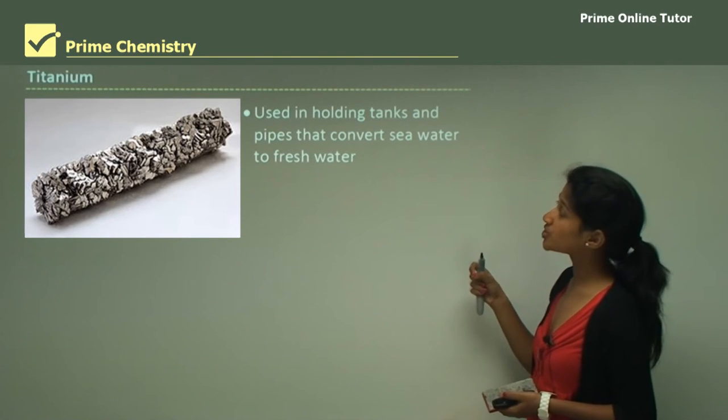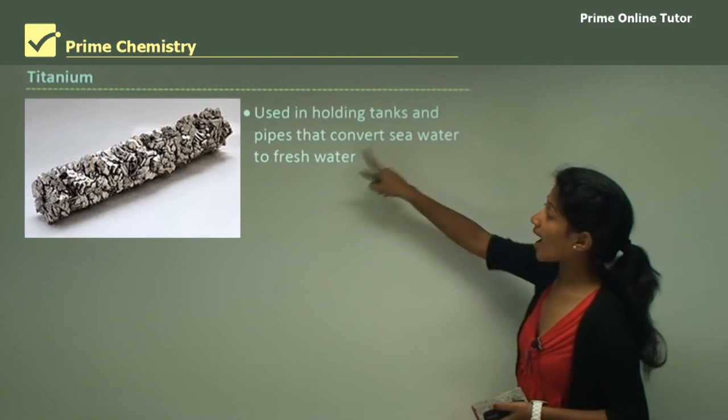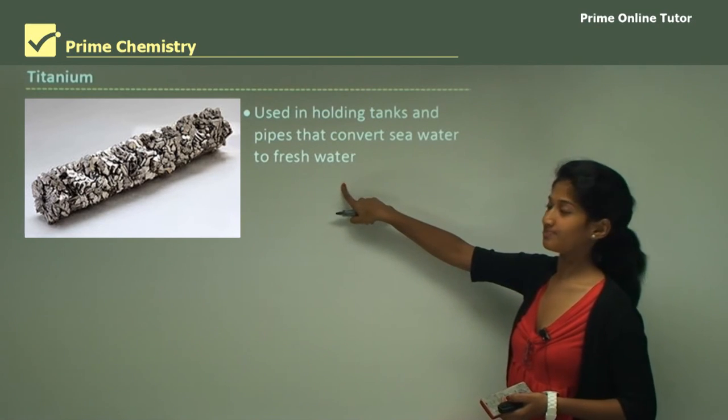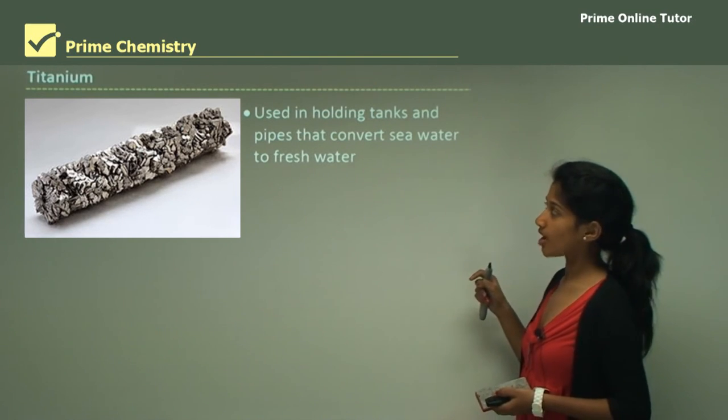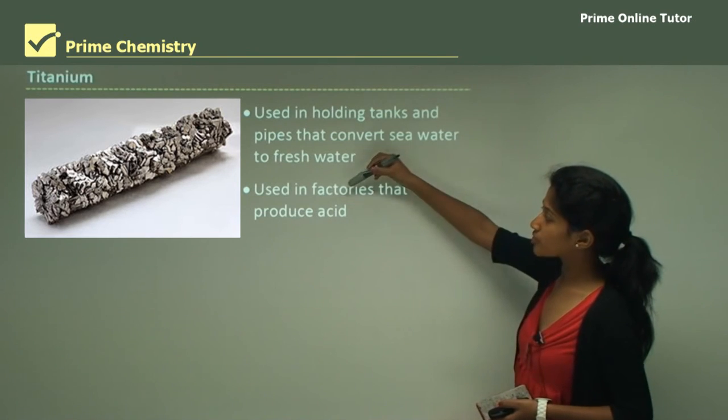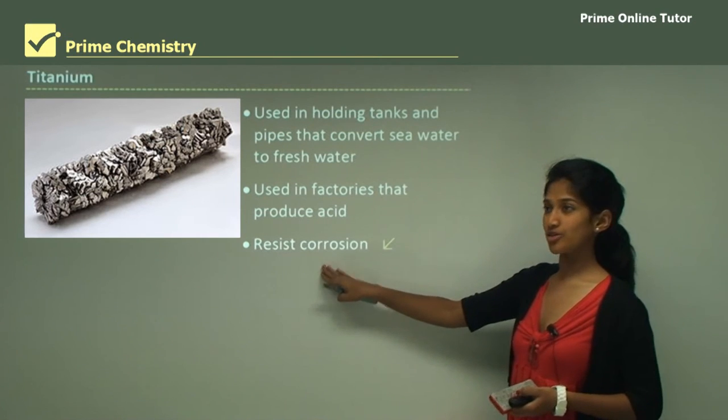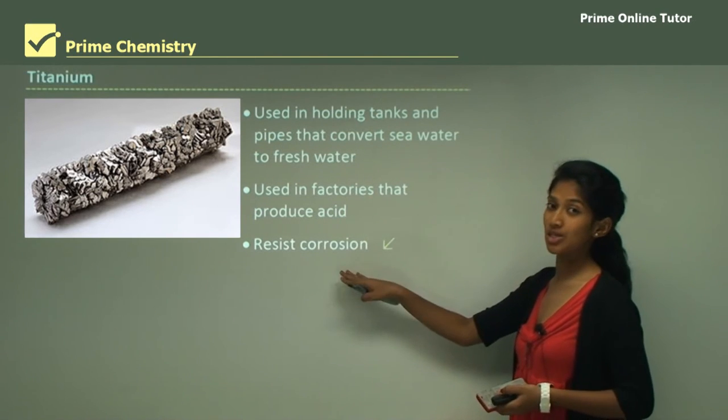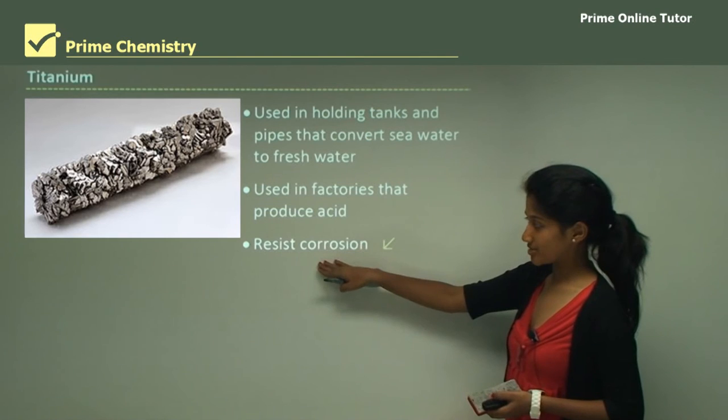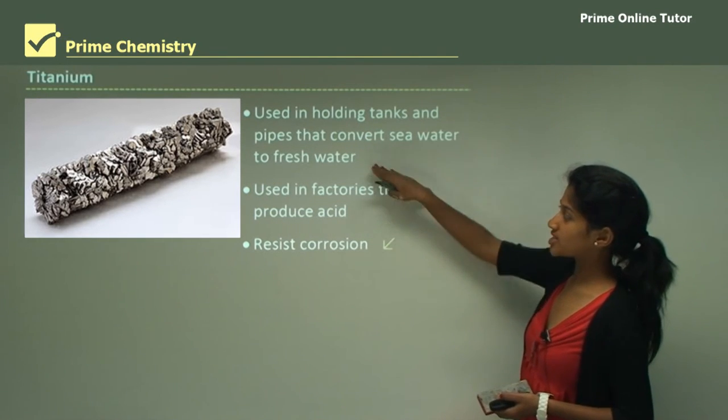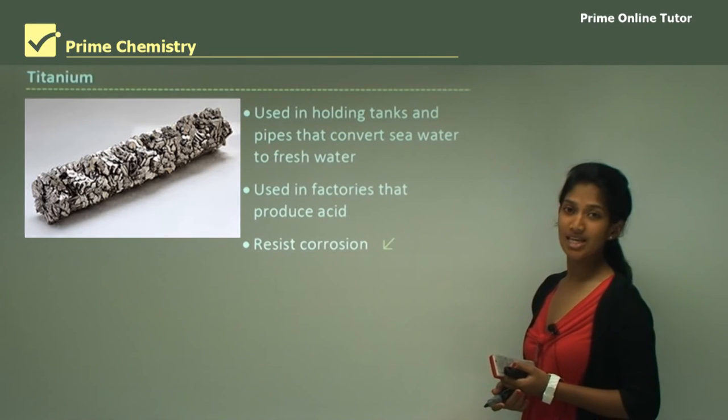Titanium is used in holding tanks and pipes that convert seawater to freshwater. It's also used in factories that produce acid and it resists corrosion. Because of its resistance to corrosion, it's mainly used for acid factories as well as for sea tanks.